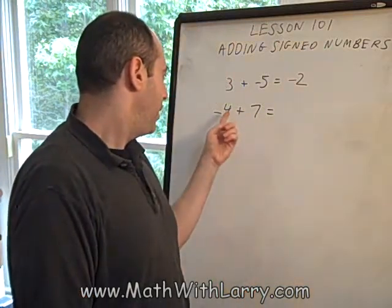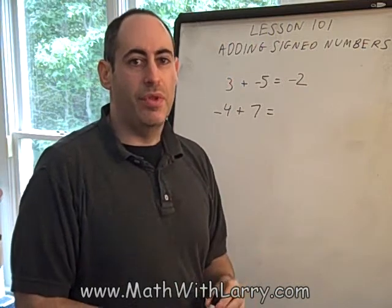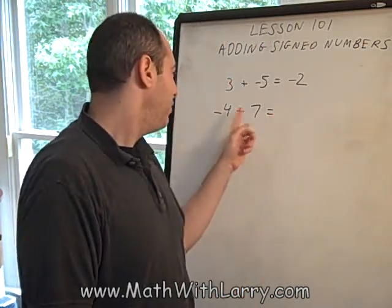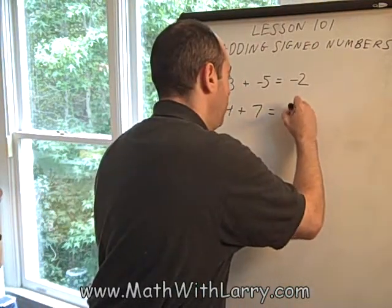So I have more money than I owe, and what I'll do is I'll simply just do seven minus four to get three. That's the difference between how much I have and how much I have to pay you back, how much I owe you. So the answer is positive three.